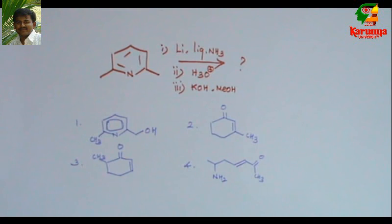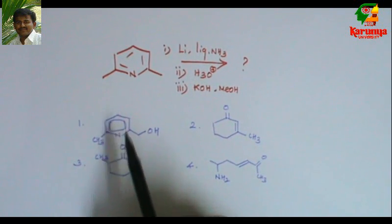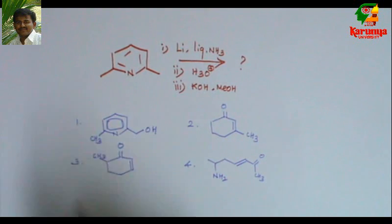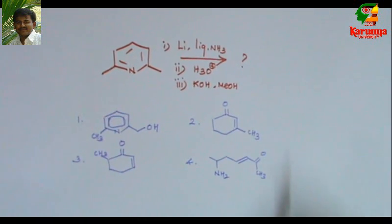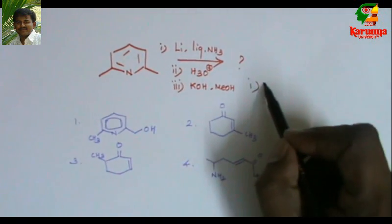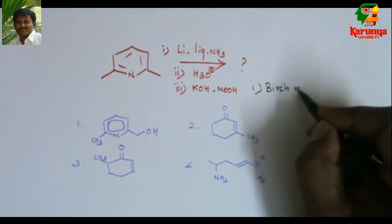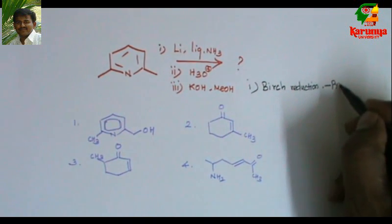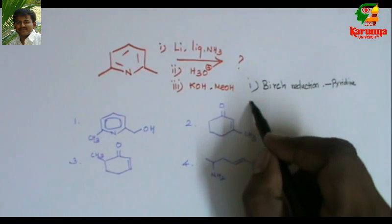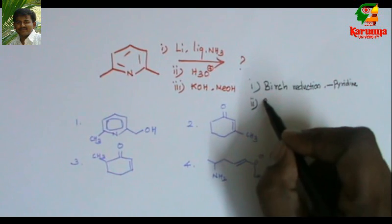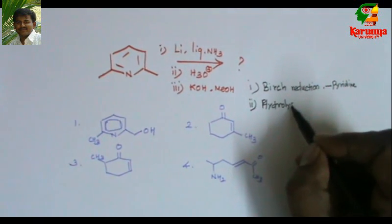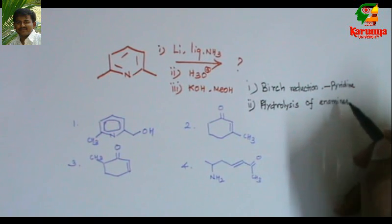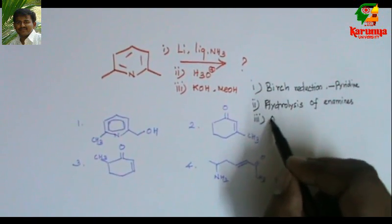The given options are: the first option is a pyridine derivative, while the remaining ones suggest the pyridine ring has been converted into something else — no pyridine ring remains. To solve this, you first need to know the selectivity of Birch reduction in pyridine. Second, hydrolysis of enamines. Third, aldol condensation.